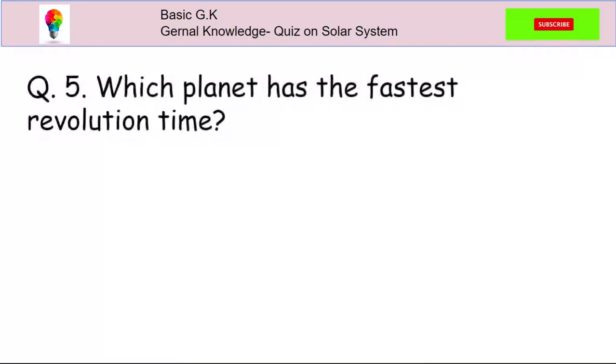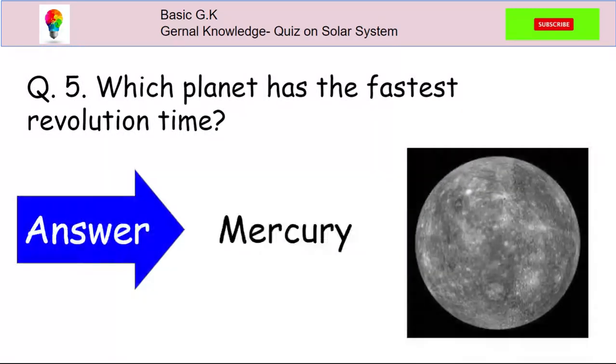Question 5. Which planet has the fastest revolution time? The answer is Mercury.